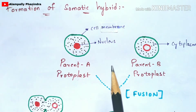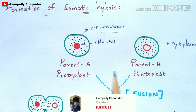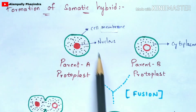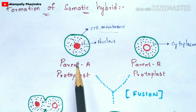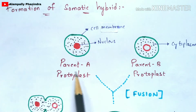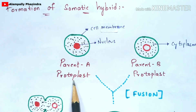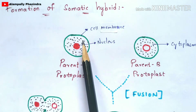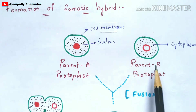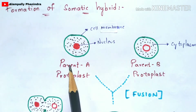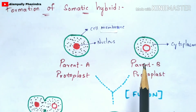For the formation of a somatic hybrid, protoplasts are taken from two different plant species or varieties — Plant A and Plant B. The Parent A protoplast is isolated using the same procedure described earlier. Parent A protoplast consists of a nucleus and cytoplasm, and the nucleus is completely active and matured. However, Parent B protoplast has cytoplasm but the nucleus is absent, inactive, or immature.